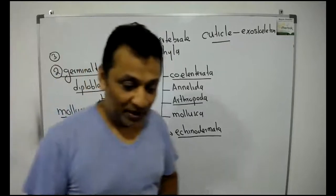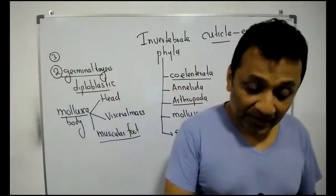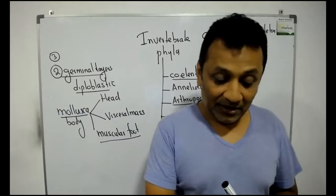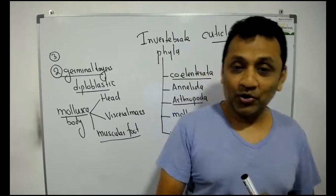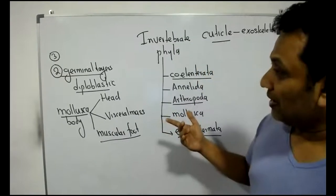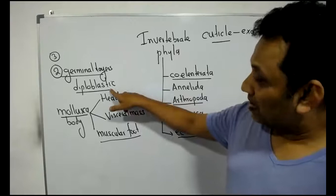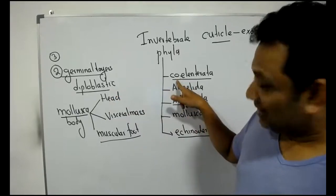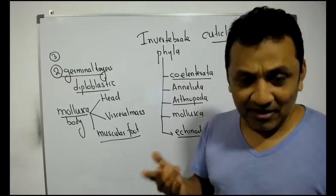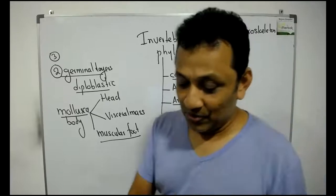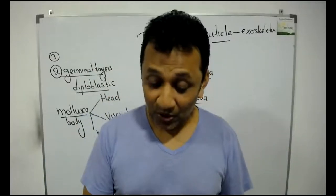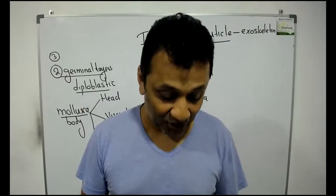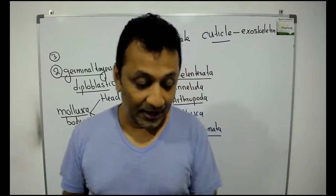A question Roman number two: Name an animal that possesses the feature A given in the above table. A is diploblastic Coelenterata. Any Coelenterata is okay. You can write hydra, you can write sea anemone, you can write jellyfish. Any one is okay.